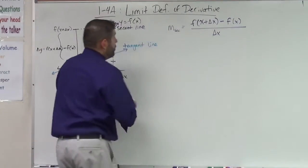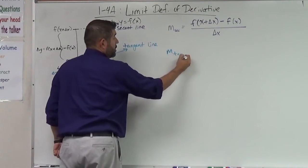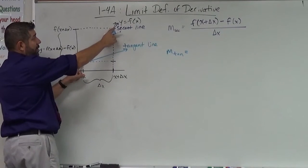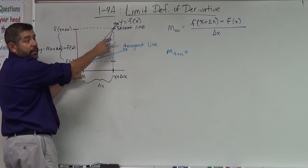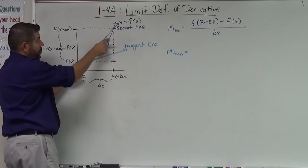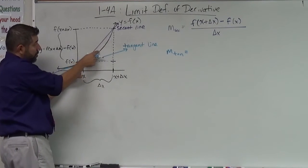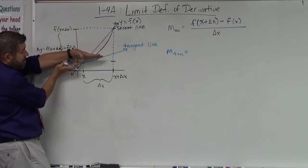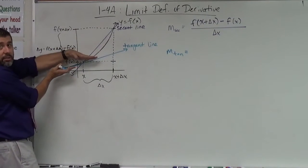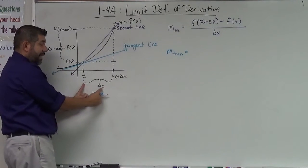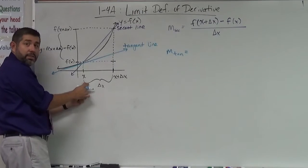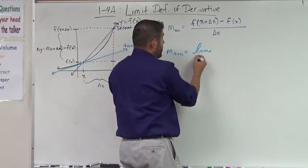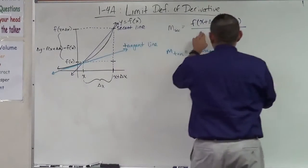So if that is the slope of the secant line, what is the slope of the tangent line? The slope of the tangent line — we want this slope here. If you imagine taking this secant line and keeping this point and moving the other point closer and closer to that point, then the line gets closer to that tangent line — that slope is getting closer to the slope of the tangent line. So what's happening? I'm taking delta x and shrinking it down to zero. So the slope of the tangent line is actually a limit — it's the limit as delta x approaches zero of the slope of the secant line.